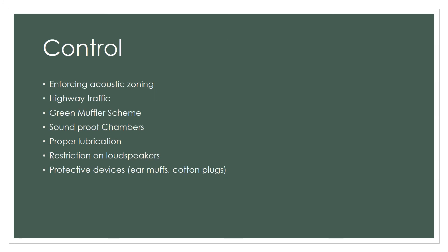Noise pollution can be controlled by reducing the sources, protecting the receiver, and checking noise transmission. We can enforce acoustic zoning — by doing so, we keep human settlements away from noise-producing industries. Highway traffic should not be allowed to pass through towns and cities.